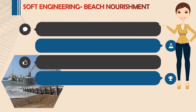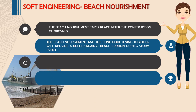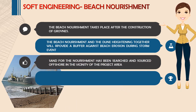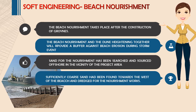As a finishing touch, the construction team applied beach nourishment for Ada Foie. The beach nourishment takes place after the construction of groins, and together the beach nourishment and groins provide a buffer against beach erosion during storm events. Sand for the nourishment was sourced offshore in the vicinity of the project area; sufficiently coarse sand was found to the west of the beach and dredged for the nourishment works.